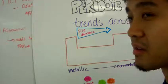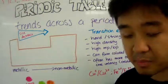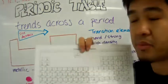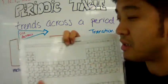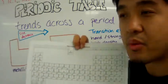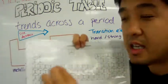We're now going to talk about the trends across a period in the periodic table, as you go from left to right.